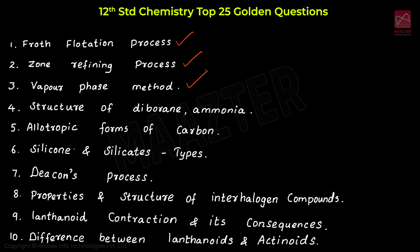Then Unit 2 important questions: structure of diborane, allotropic forms of carbon, what are silicones and explain their types, and what are silicates and explain their types. These are the key questions from Unit 2.